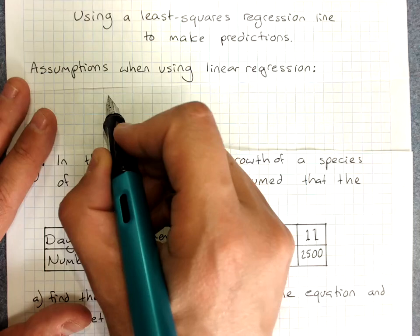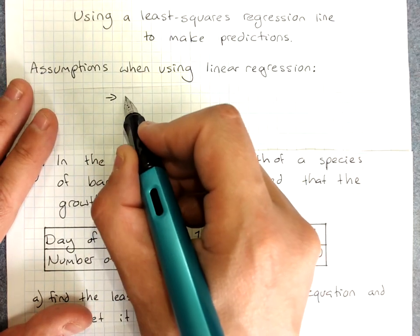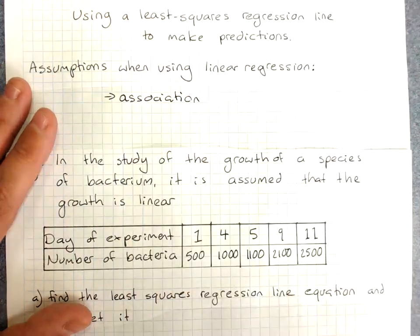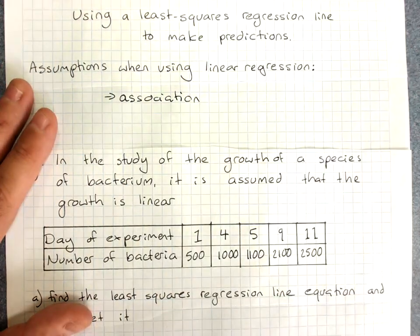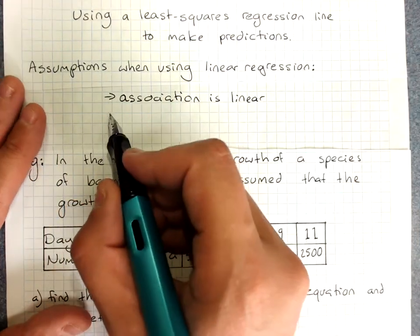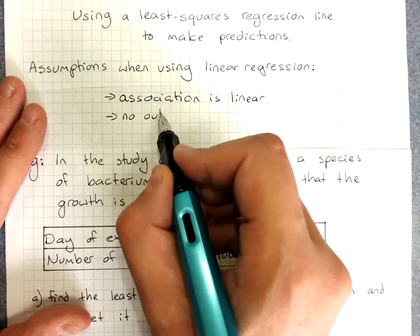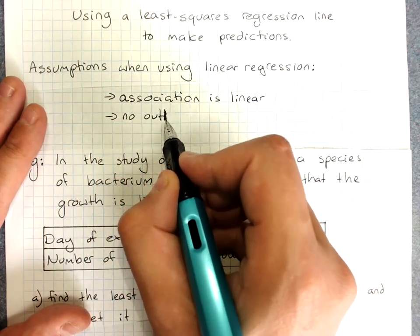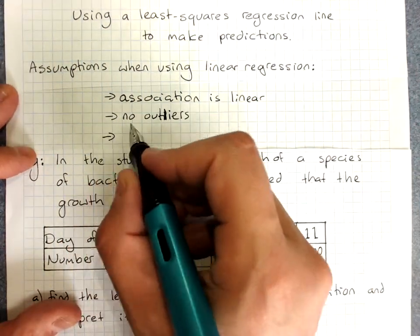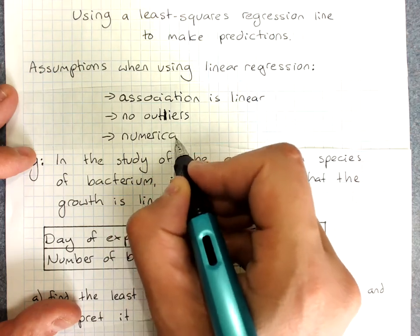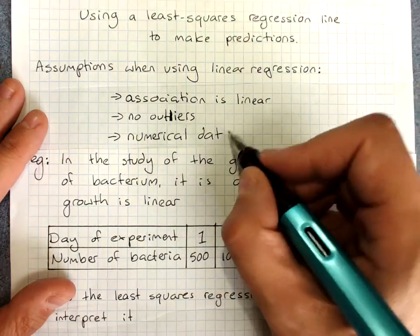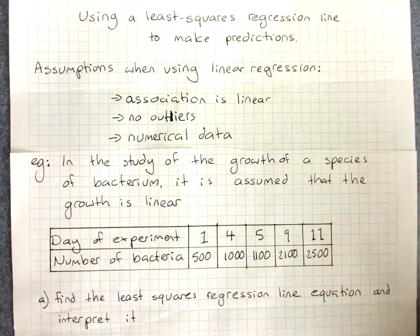Assumptions when we're using linear regression: We are assuming that the association is linear. It won't work as well if we're trying to fit this to non-linear data. You can, it just won't work as well. We are assuming that there's no outliers. You can use it with outliers, it just won't work as well. And of course we are assuming that this is numerical data, because we're doing this with scatter plots, and that's numerical data.